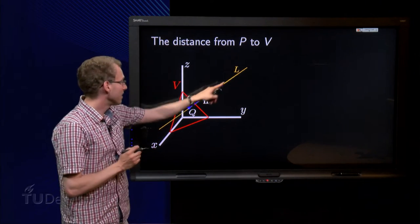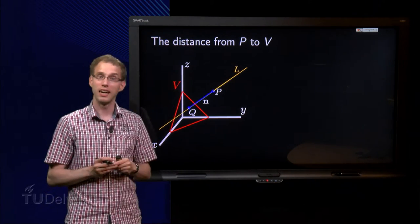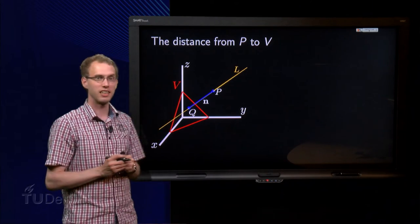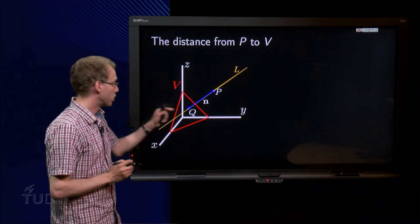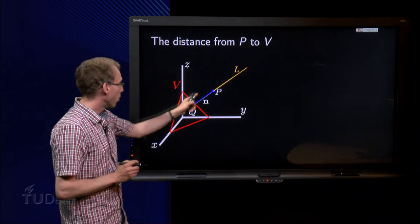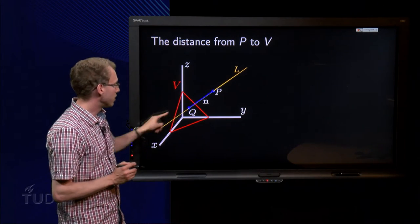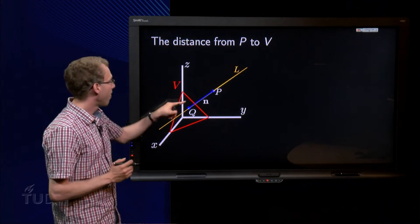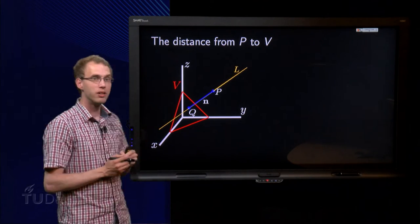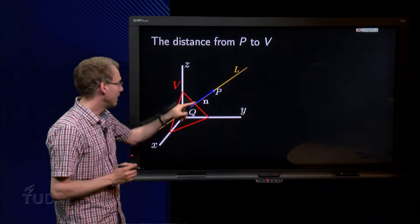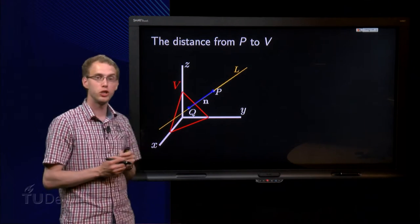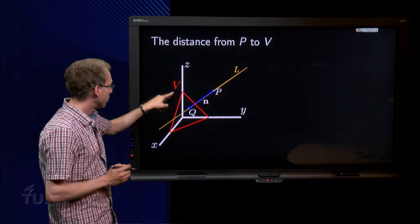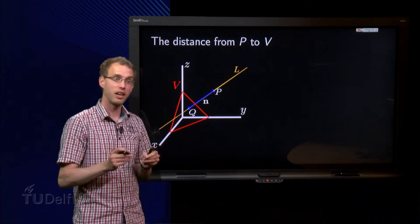Well the idea is to find the line L here, intersecting the plane V in the point Q, and normal to V. That means that since L is normal to V, orthogonal to V, the distance from P to V is exactly the same as the distance from P to Q, because V and L are intersecting each other in Q.